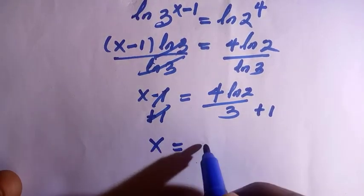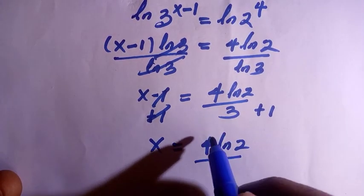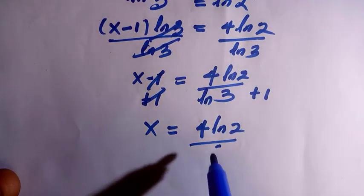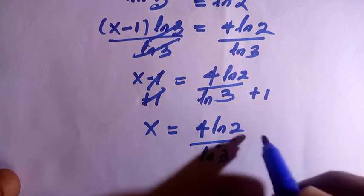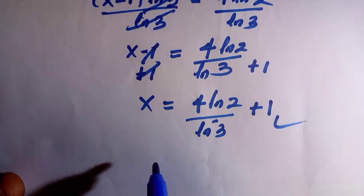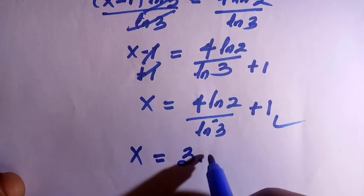We have x equals to 4 ln 2 divided by ln 3 plus 1. And the value of x, we can get the decimal value as it has been approximated to around 3.54, and this is how to solve this problem.